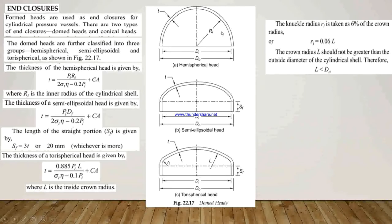Here, Ri is the inner radius and Di is the inner diameter, Du is the outer diameter, and T is the wall thickness. For the Semi-Ellipsoidal Head, Sf is the length of the straight portion. And here, in the Torispherical Head, L is the inside crown radius.